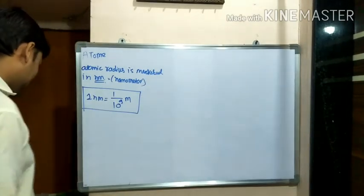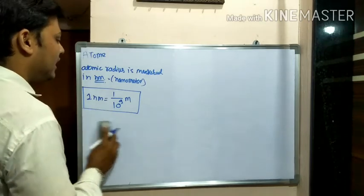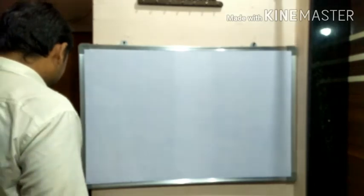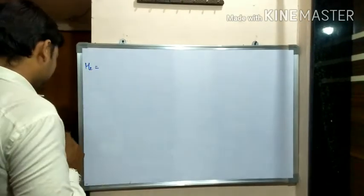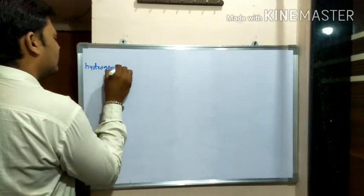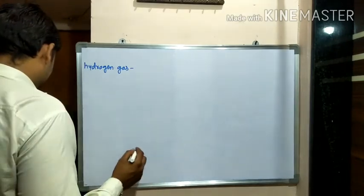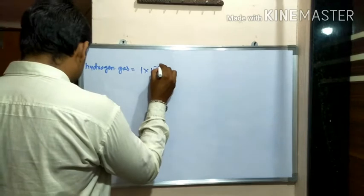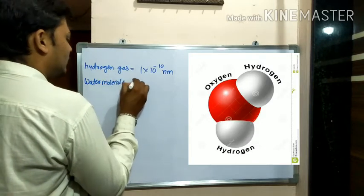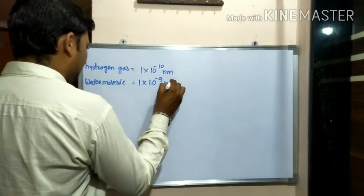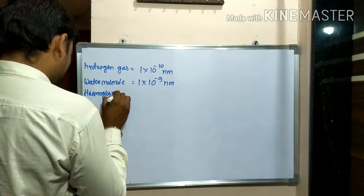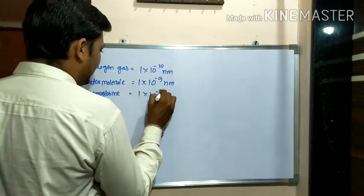Some atomic radius were given already to us, like hydrogen, water, and hemoglobin, which is important for our body. First is hydrogen gas, which is 1 times 10 to the power minus 10 Nm. Next, water molecule is 1 times 10 to the power minus 9 Nm. Last, hemoglobin is 1 times 10 to the power minus 8 Nm.